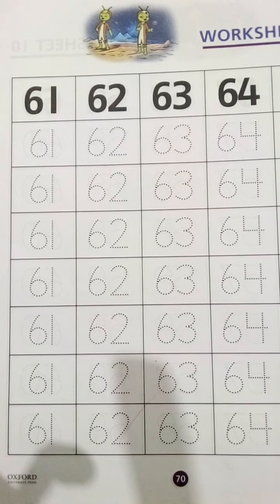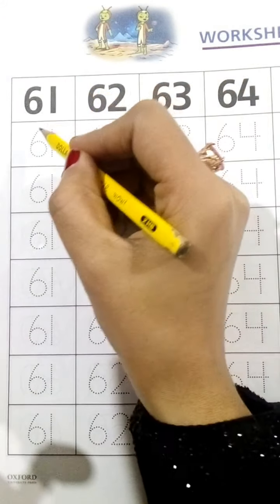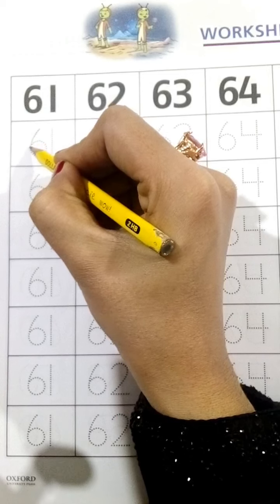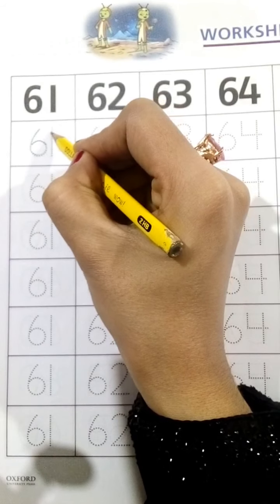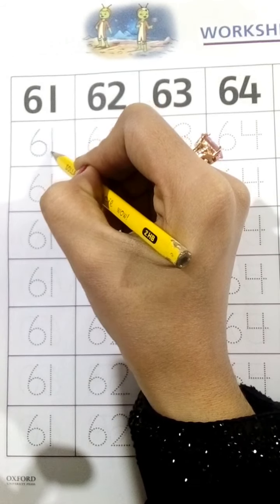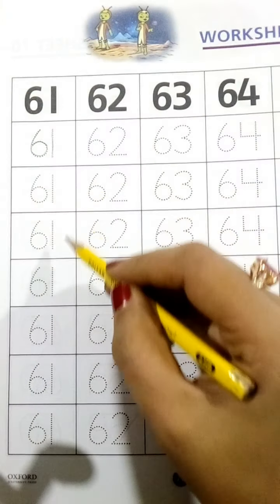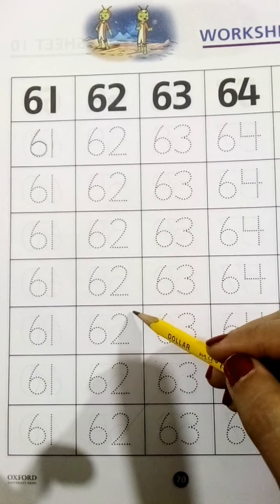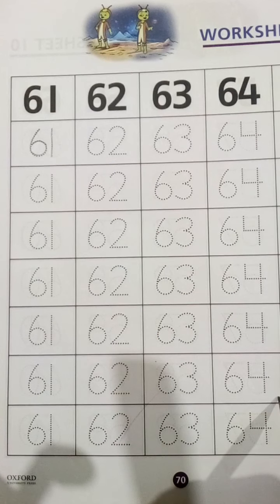हमने इनको trace करना है। जैसे कि एक में आपको करके दिखाती हूं, बिल्कुल dots के ऊपर ऊपर — sixty one। इस तरह से आपने इन सब lines को trace करना है जिस तरह से लिखी हैं।